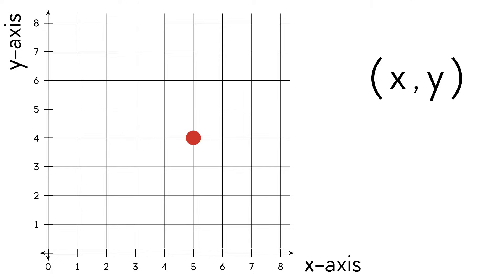The x-coordinate corresponds to the x-axis — it tells us the horizontal distance from zero. The y-coordinate corresponds to the y-axis — it tells us the vertical distance from zero. You can memorize that x is the first coordinate and y is the second coordinate because x comes before y in the alphabet.